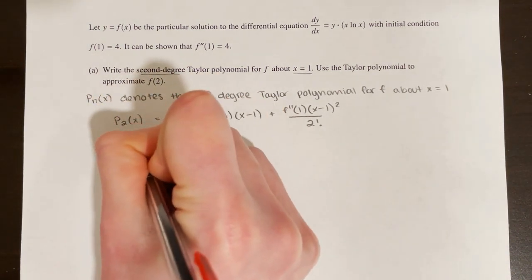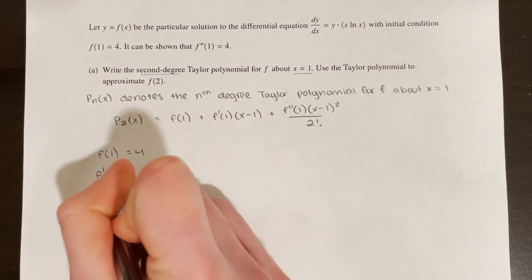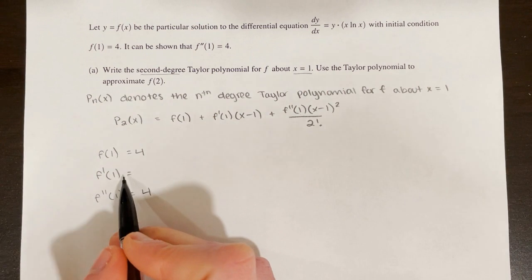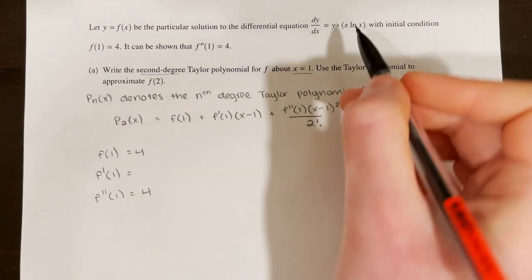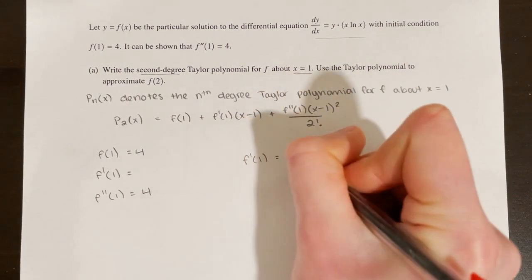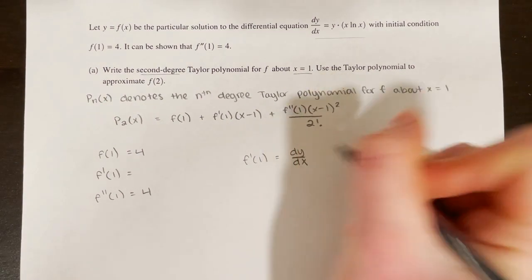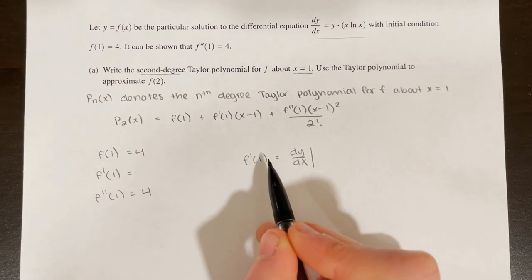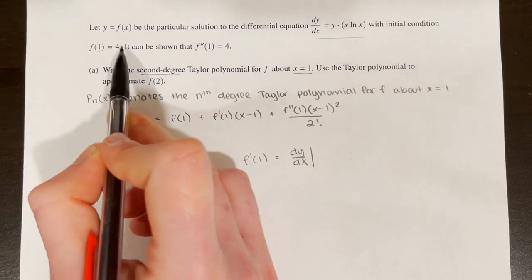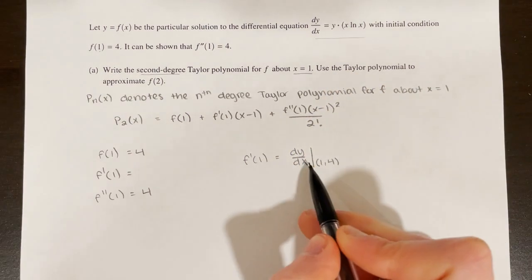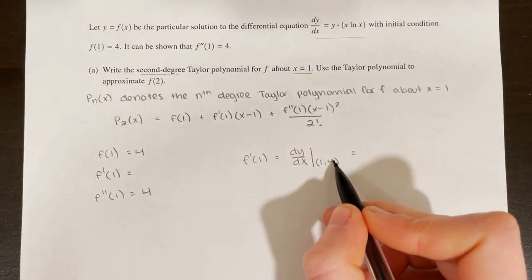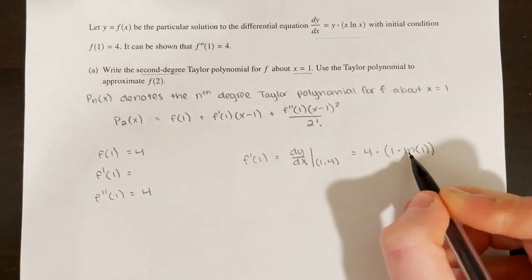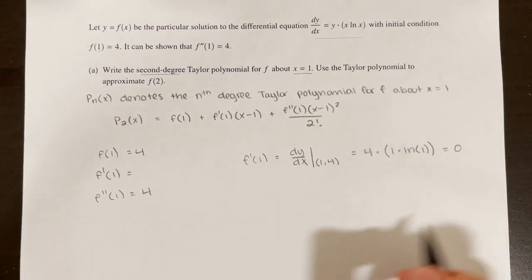f of 1 equals 4 and f double prime of 1 equals 4 are given. To find f prime of 1, we use the differential equation: f prime of 1 equals dy/dx evaluated at x equals 1. Using the initial condition, at x equals 1, y equals 4, so we plug in the point (1, 4): dy/dx equals 4 times 1 times the natural log of 1. The natural log of 1 is 0, so f prime of 1 equals 0.